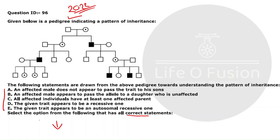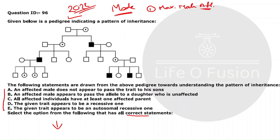When you see a pedigree, the first step is to find the mode of inheritance. Once you find the mode, it will be very easy to solve the question. As you can see here, almost all affected individuals are male — that is our first clue: maximum males are affected.